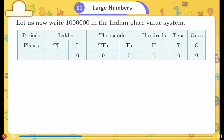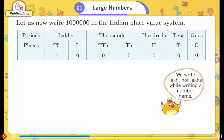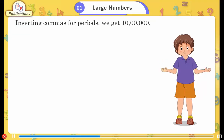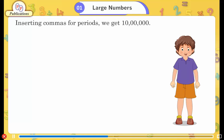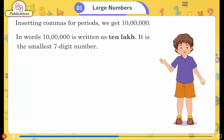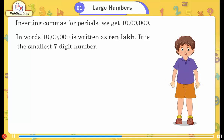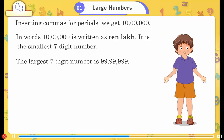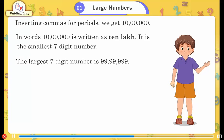Let us now write 10 lakh in the Indian place value system. We write 'lakh' not 'lakhs' while writing a number name. Inserting commas for periods, we get 10,00,000 — ten lakh. In words, 10,00,000 is written as 10 lakh; it is the smallest seven-digit number. The largest seven-digit number is 99,99,999.